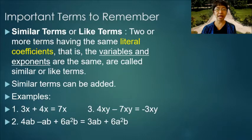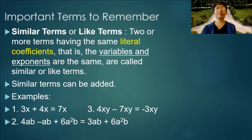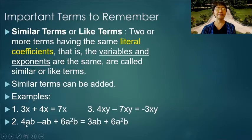Similar terms or like terms: two or more terms having the same literal coefficients — that is, the variables and exponents are the same — are called similar terms. Similar terms can be added. Example 1: 3x plus 4x equals 7x.